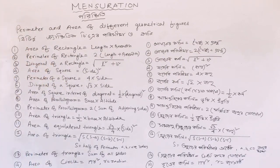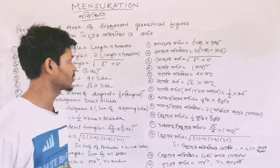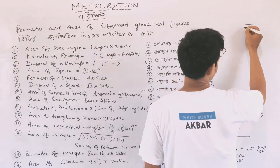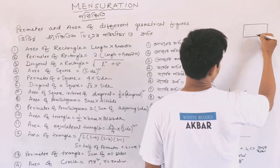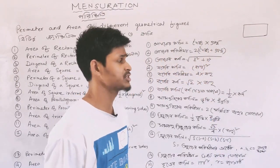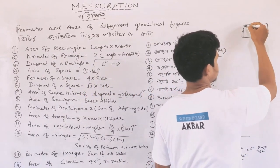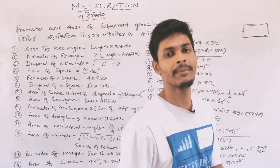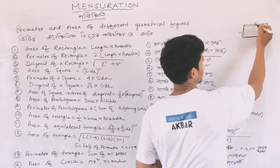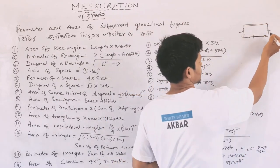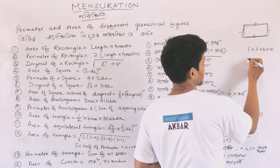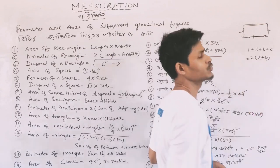Next, Perimeter of Rectangle. If you know the formula, the perimeter is calculated as 2 times the length plus 2 times the breadth. So the formula is called 2×length + 2×breadth.